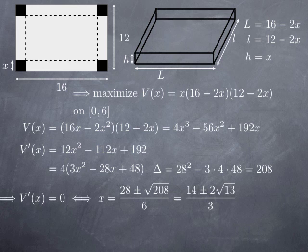208 turns out to be 13 multiplied by 16. So square root of 208 is square root of 16 times square root of 13. Square root of 16 is 4. And so I have 28 plus or minus 4 square root of 13 over 6, which simplifies as 14 plus or minus 2 root of 13 over 3.